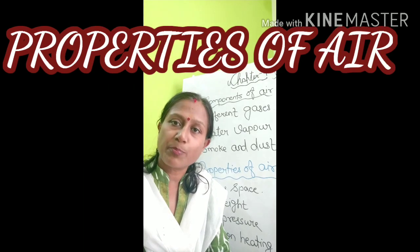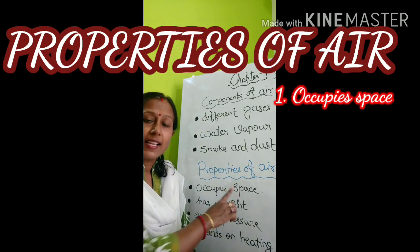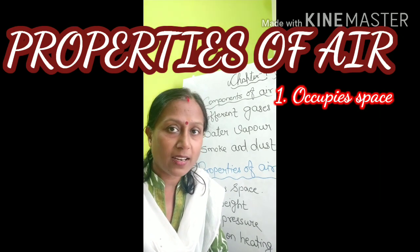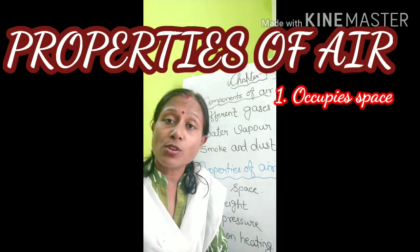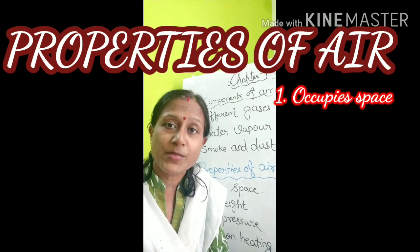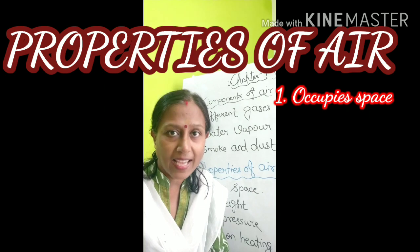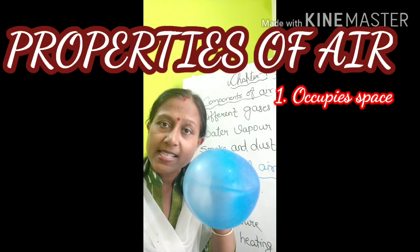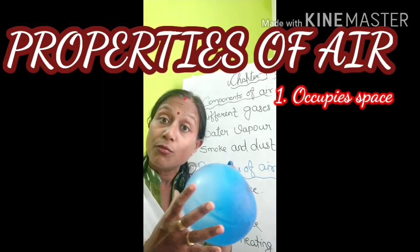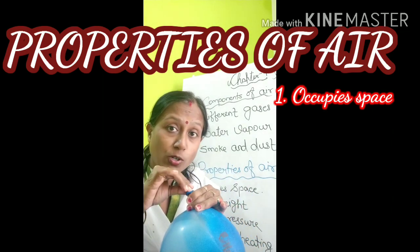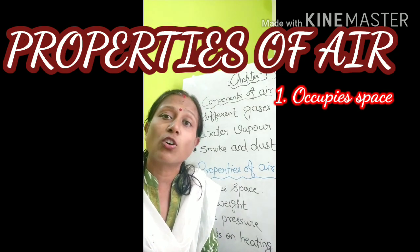Now let us discuss the properties of air. The very first property is that air occupies space. Air is present all around us — even an empty tumbler has air in it. Whenever we fill air into any object, the air occupies the space of that object. For example, this is a balloon — I have blown air into it, so the balloon gets inflated. Because the air blown inside it occupies the inner space of the balloon. In this way we can say that air occupies space.